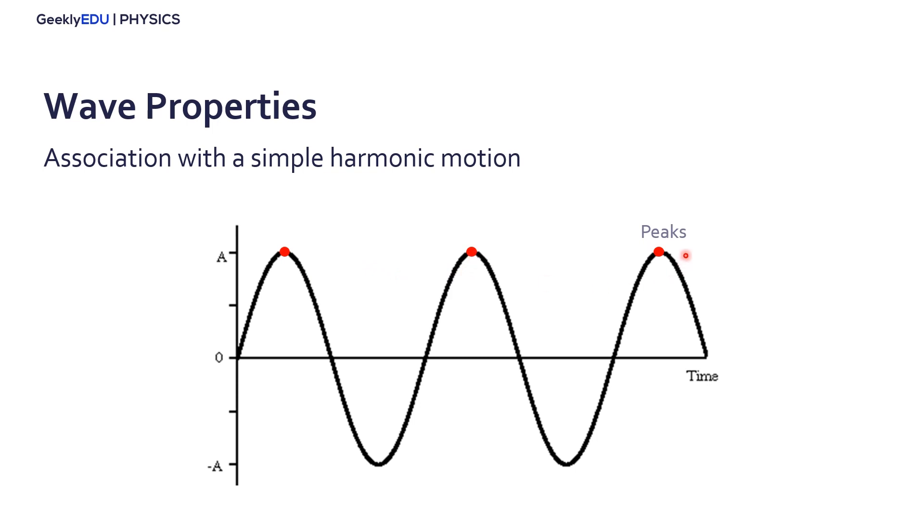First, these points here in the upper part, the maximum point are the peaks. The opposite side here at the bottom, we have the valleys. This distance from zero to the maximum distance it reaches, so from zero to the peak is our amplitude.